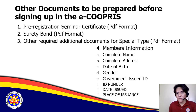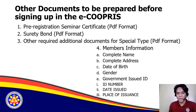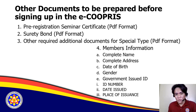First, secure the pre-registration seminar certificate. Coordinate with the focal persons of the seminar and ensure that the PRS certificate is already signed by the head of the section and the regional director. Once you receive the hard copy, scan it and ensure the result is in PDF format.